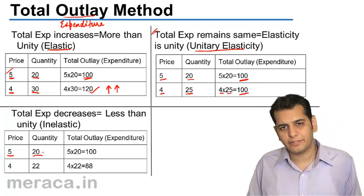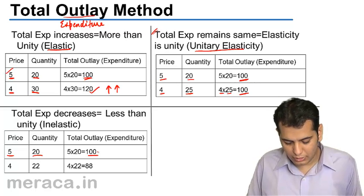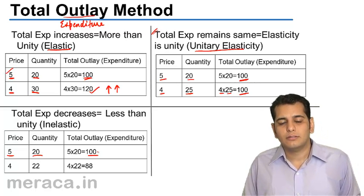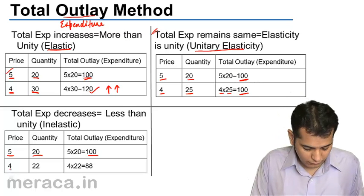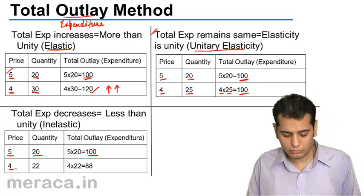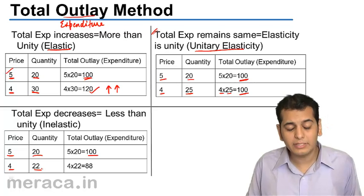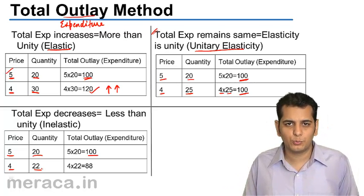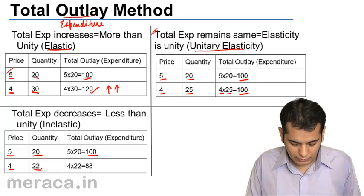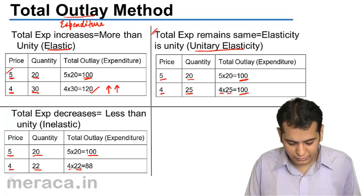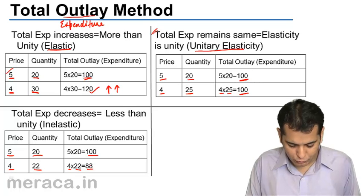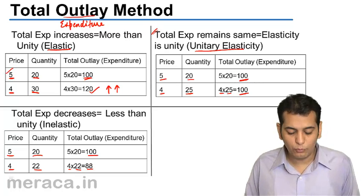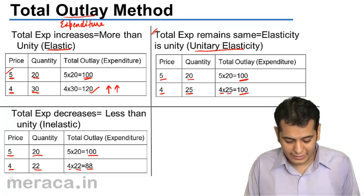Finally, in this example, the price is ₹5 and the quantity consumed at this price is 20, giving a total outlay of 100. When the price falls to ₹4, the quantity consumed increases to 22, but the total outlay has reduced to 88, because 4 × 22 = 88.